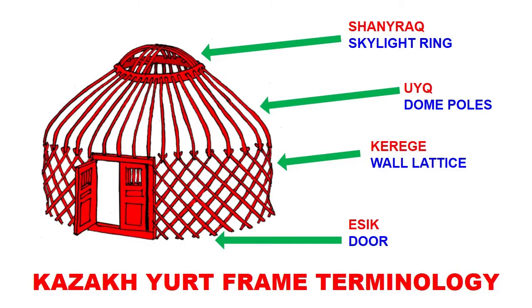Now moving to Kazakh yurt frame terminology — this is where I'm on my native turf, and these terms I know from a long time ago. The door is yestik. The wall lattice section is called kerege. The dome poles are called uvaq. And the skylight assembly is called shanrak.